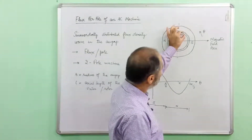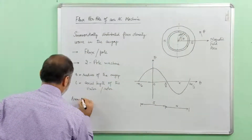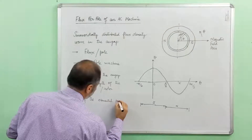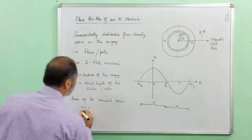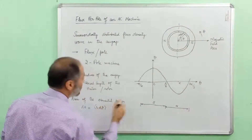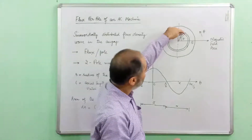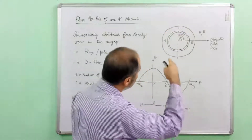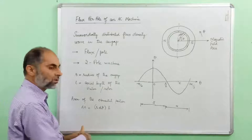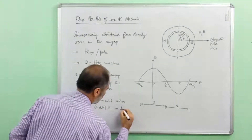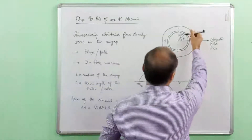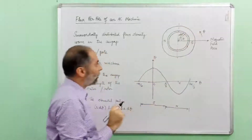The area of this small elemental portion of the air gap, dA, will be equal to r·dθ — that is, rd theta is one dimension — into the other dimension L. We are considering the portion of the air gap which, if we look from the air gap, will be a rectangular strip with one dimension equal to r·dθ and the axial dimension L. So we can write dA = L·r·dθ.